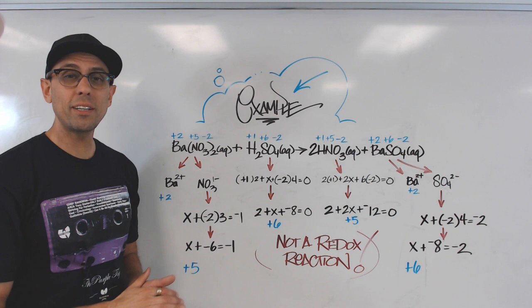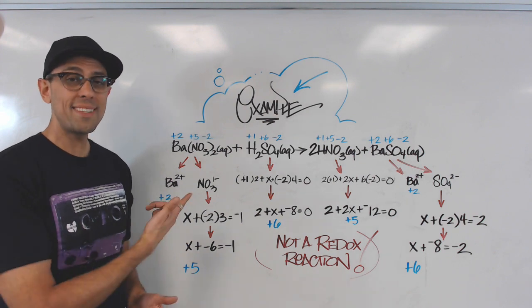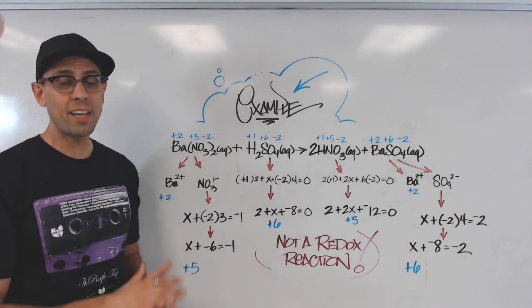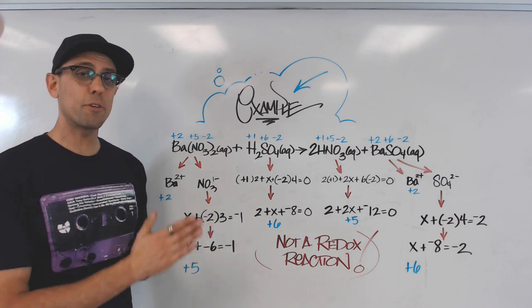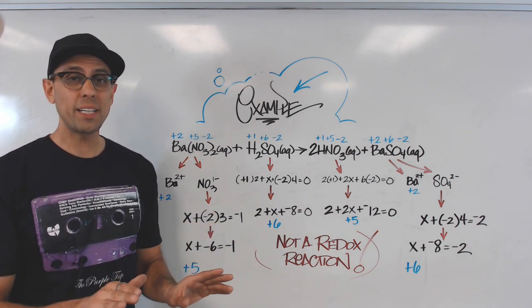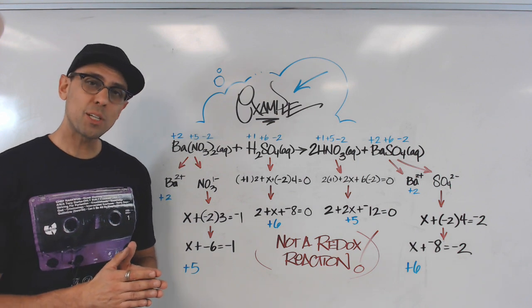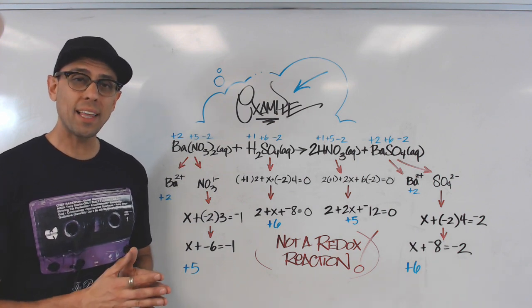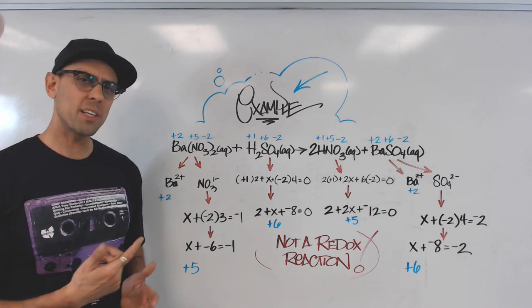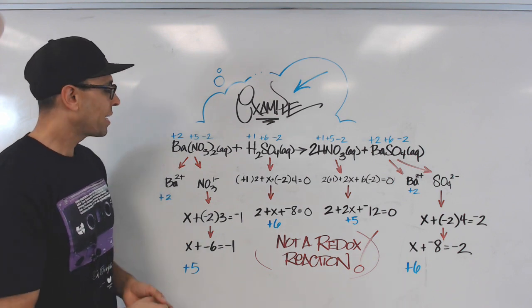Now we're ready to do an example together. This is a double replacement reaction. And all students are taught that these types of reactions are never redox. But why? In a question, you'll probably be asked to provide evidence to support that claim. And you'll need oxidation numbers to do it. So let's figure this out together.